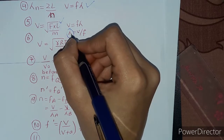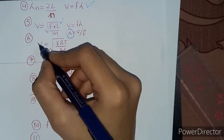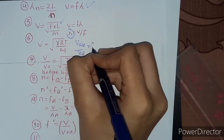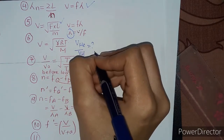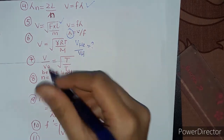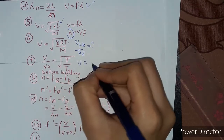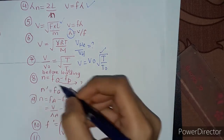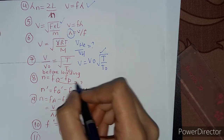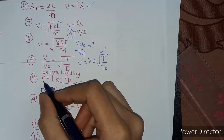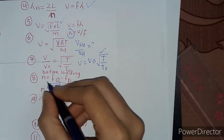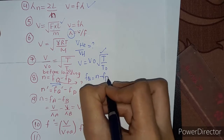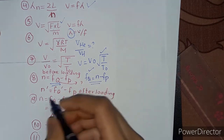Then putting v here and finding the value of lambda. For the sixth numerical, we find v equal to under root of gamma RT divided by M. We have to find the ratio by solving each value. In the seventh numerical, we find v equal to v-naught times under root of T divided by T-naught. In the eighth numerical, we find the number of beats before and after loading. Before loading, rearranging the equation gives f_Q equal to n minus f_P.